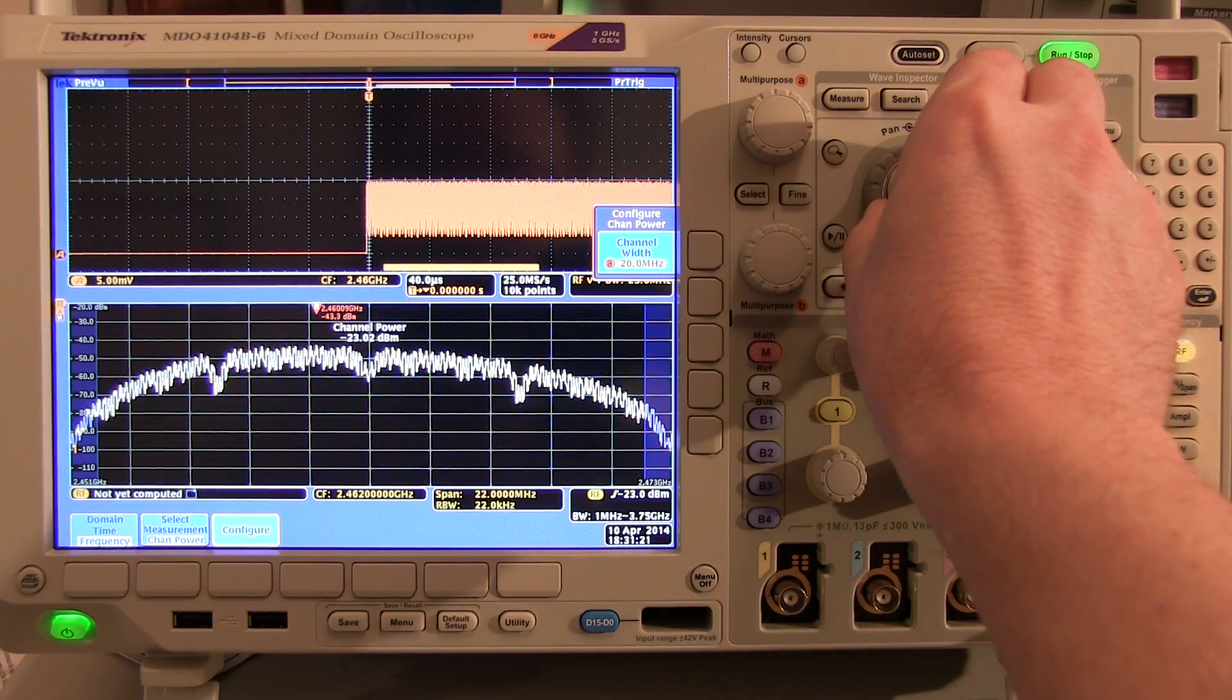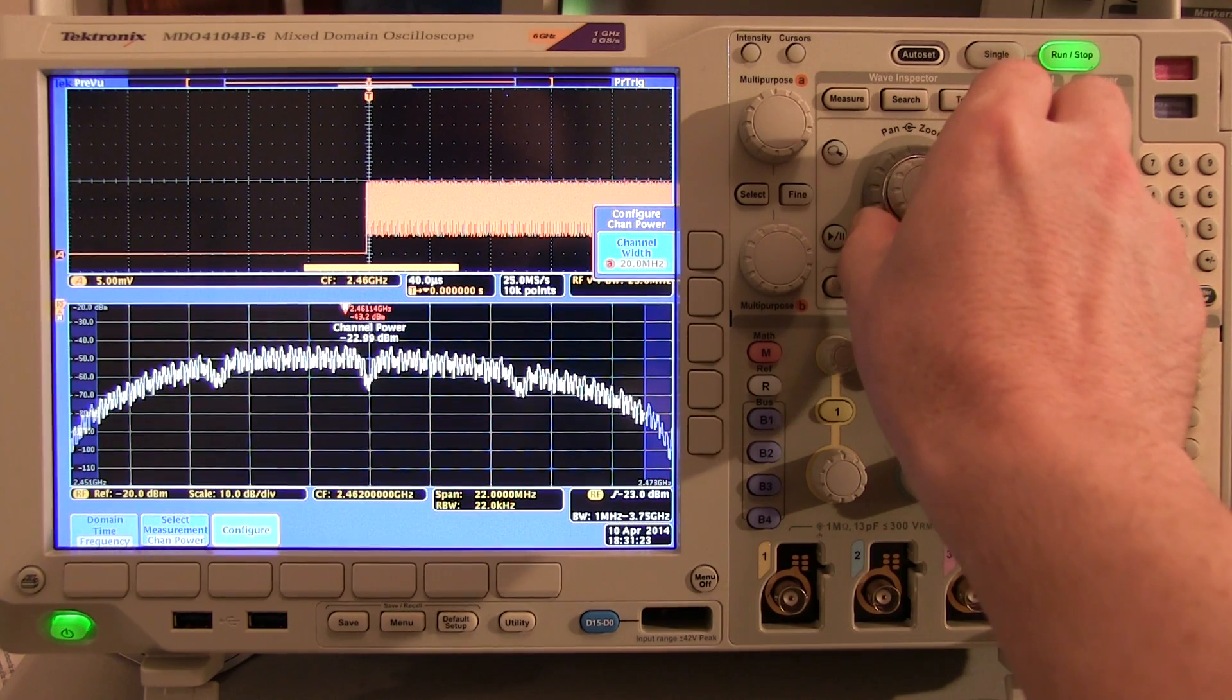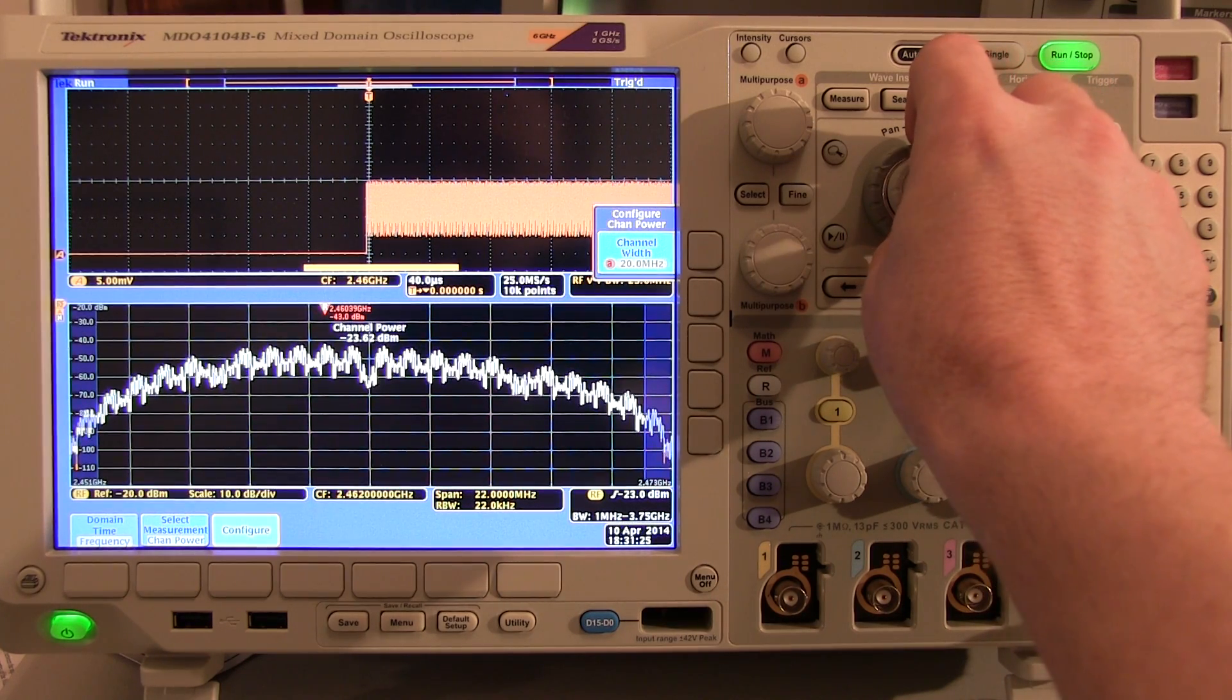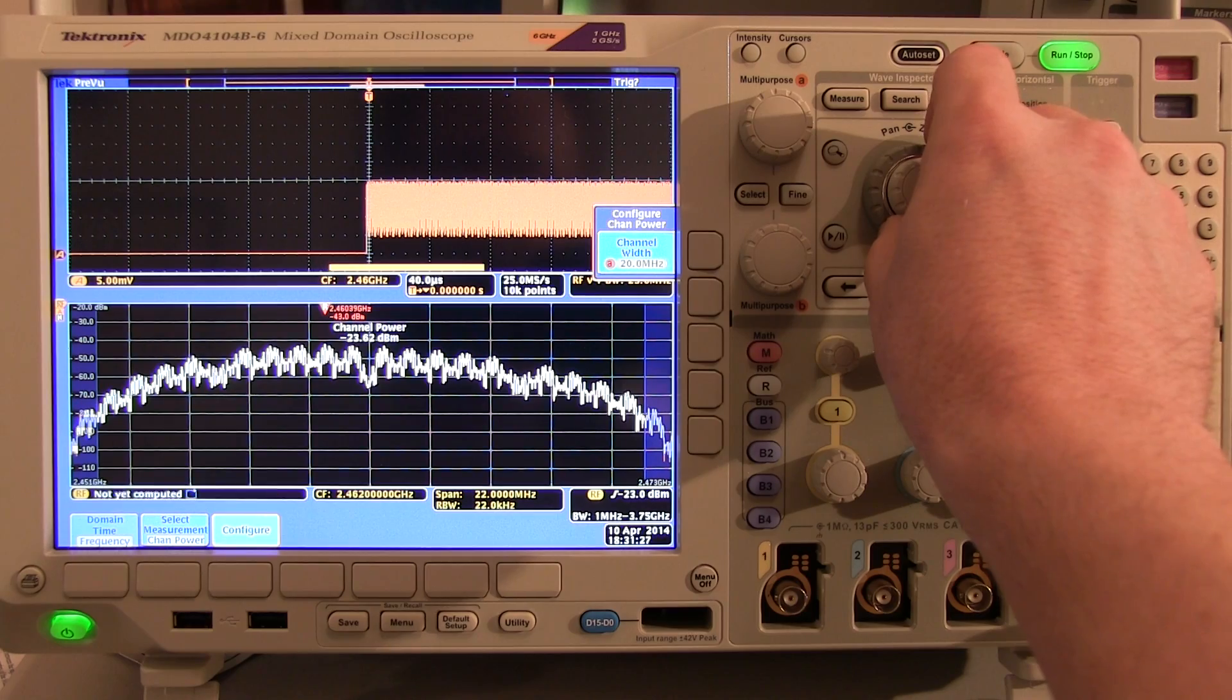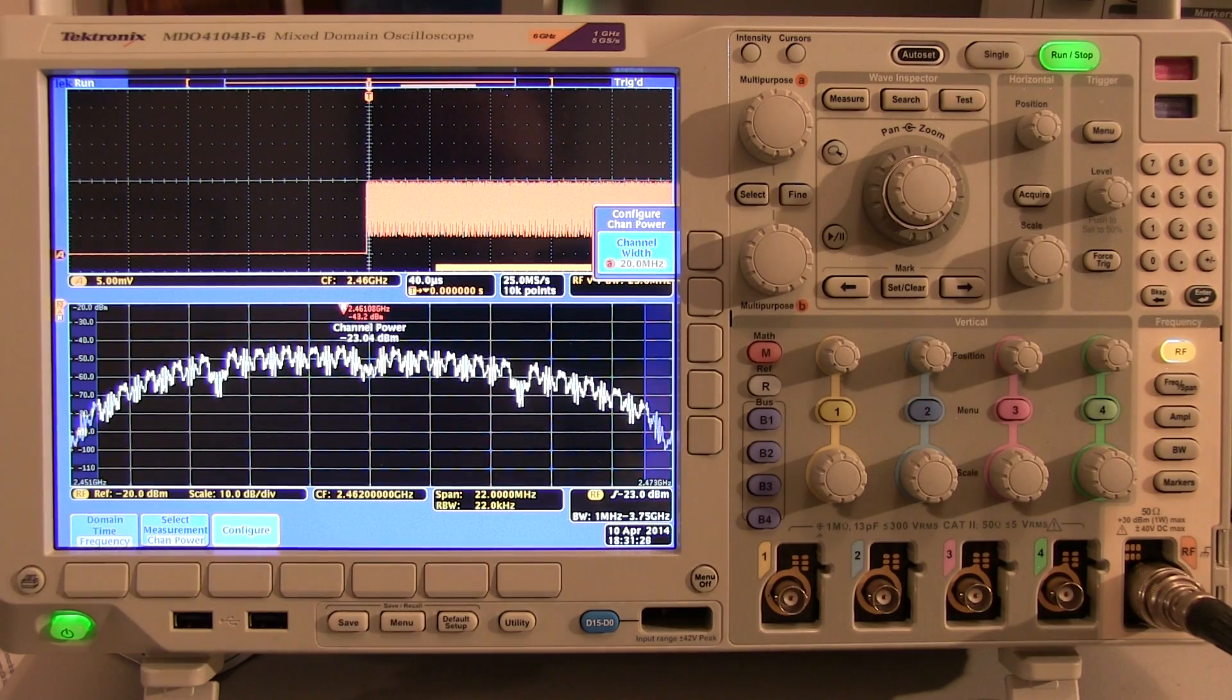If we hadn't made that adjustment, the measurement would have been made straddling that leading edge. And we wouldn't have gotten an accurate channel power measurement because we were measuring part of the energy when the signal wasn't there.